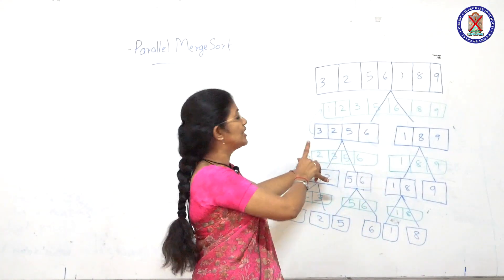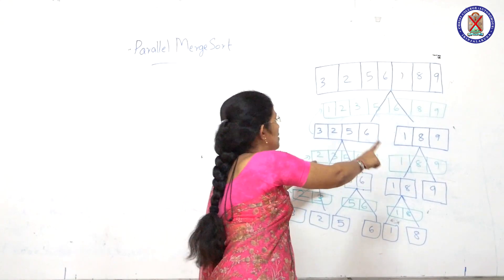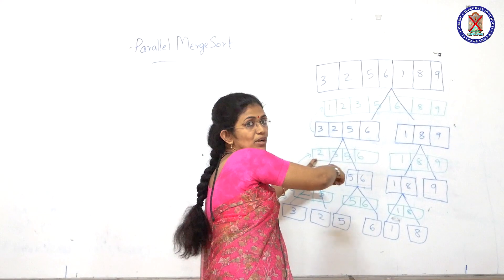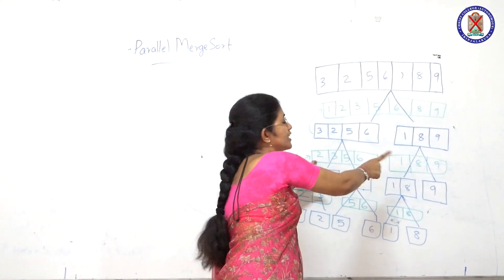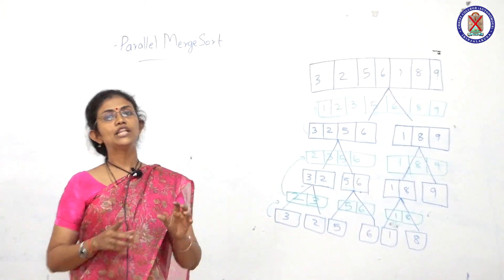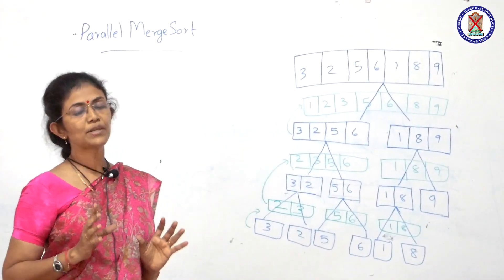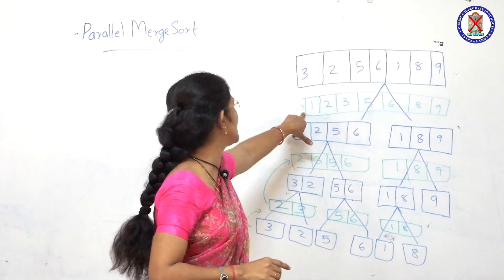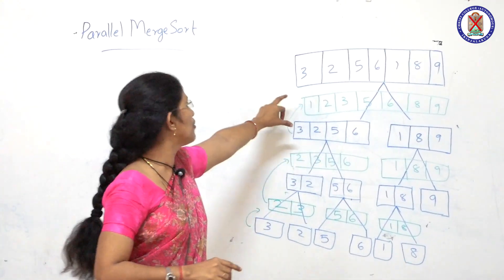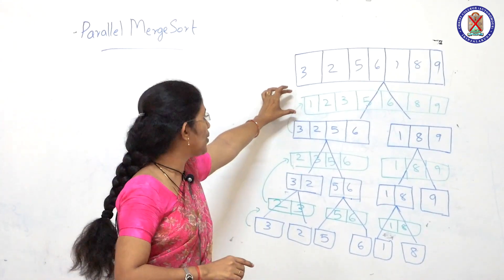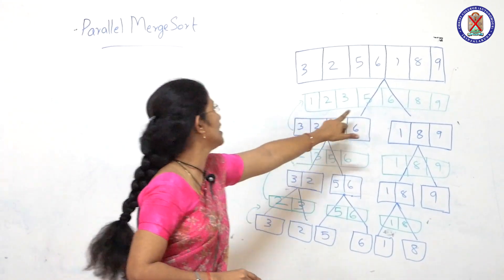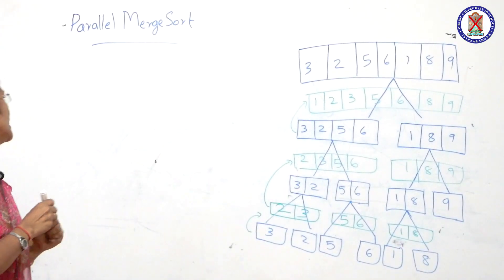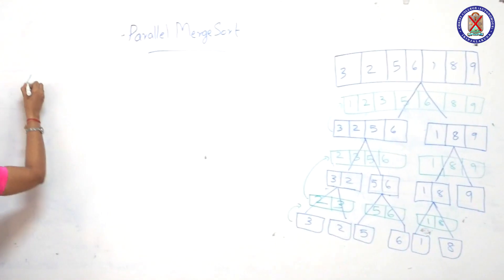We compare elements the same way throughout. We can use two looping variables to handle this process. This gives us the original merge sort.